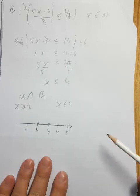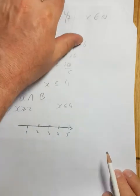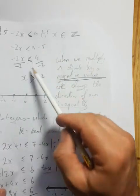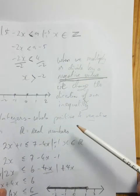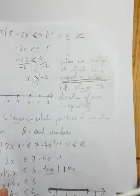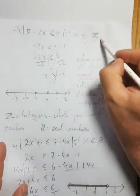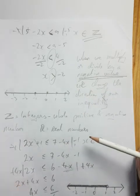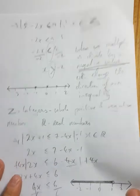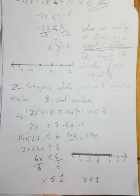That's how you do linear inequalities. They're not that difficult — the key rule to remember is that when we multiply or divide our inequality by a negative value, the inequality sign changes direction. You also need to remember what ℤ, ℕ, and ℝ mean so you know what kind of number line to draw.